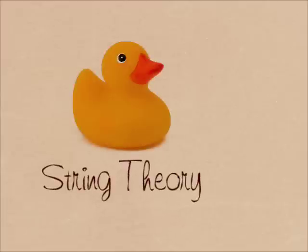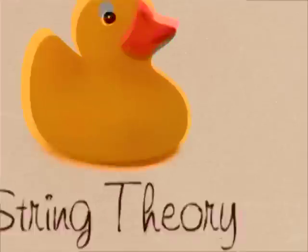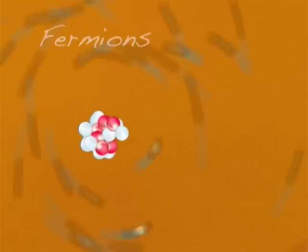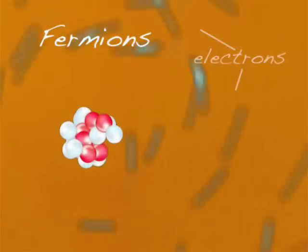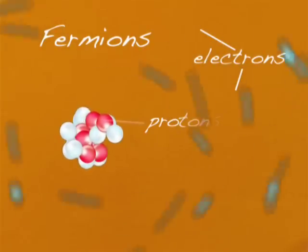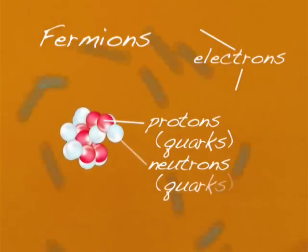In our basic understanding of physics, objects are made of atoms. Each atom contains subatomic particles called fermions. But what makes up these particles?